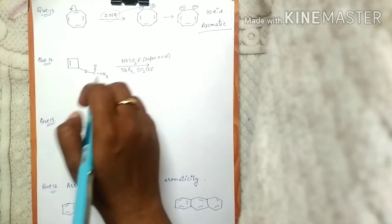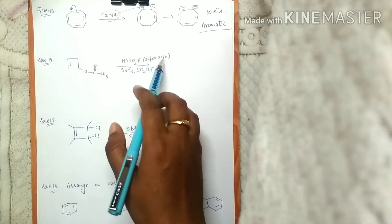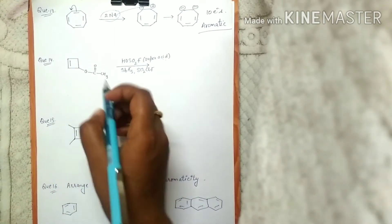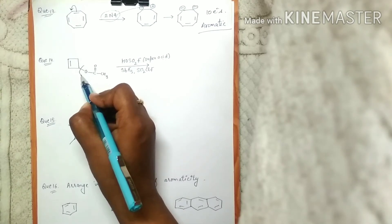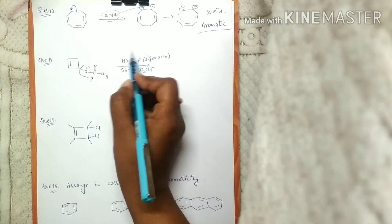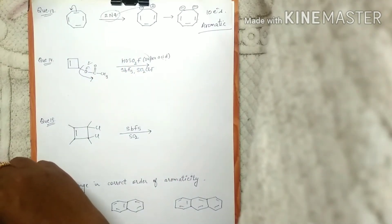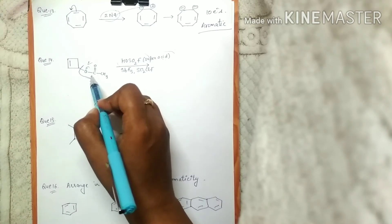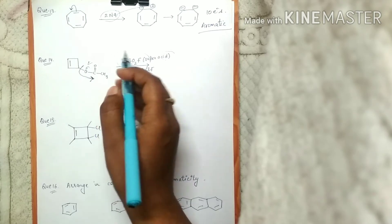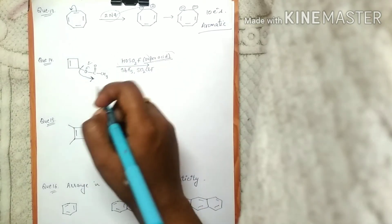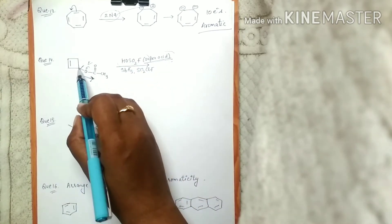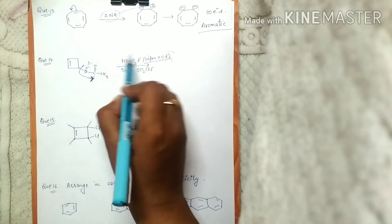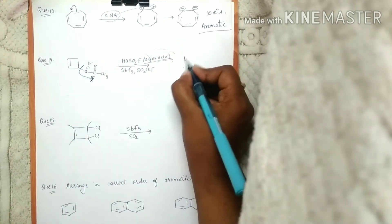Coming to question number 14 — this compound is given to us and a super acid HO-SO₂F is added to it. What happens here: the oxygen present goes out along with its electrons, developing a negative charge on it, and the super acid is attached to it. This acid removes this group. We look for polarity in the bonds — this bond is polar so it will break via heterolytic cleavage. The oxygen goes along with its electrons, gets combined with the super acid, and we get this kind of structure.